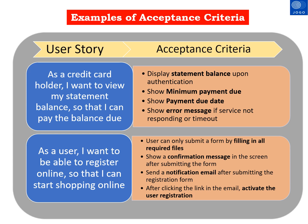The second user story is: 'As a user, I want to be able to register online so that I can start shopping online.' There are four acceptance criteria: user can only submit a form by filling in all the required fields, show a confirmation message on the screen after submitting the form, send a notification email after submitting the registration form, and after clicking the link in the email, activate the user registration.